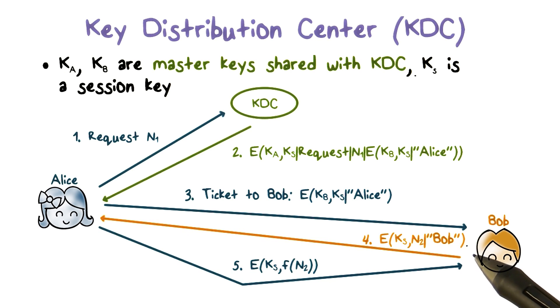Then Bob sends a message that contains nonce N2, which is a random value and his ID encrypted using session key KS to Alice. When Alice receives this message, she knows that she is communicating with Bob because only he can decrypt the ticket and get the session key KS and encrypt the ID properly.